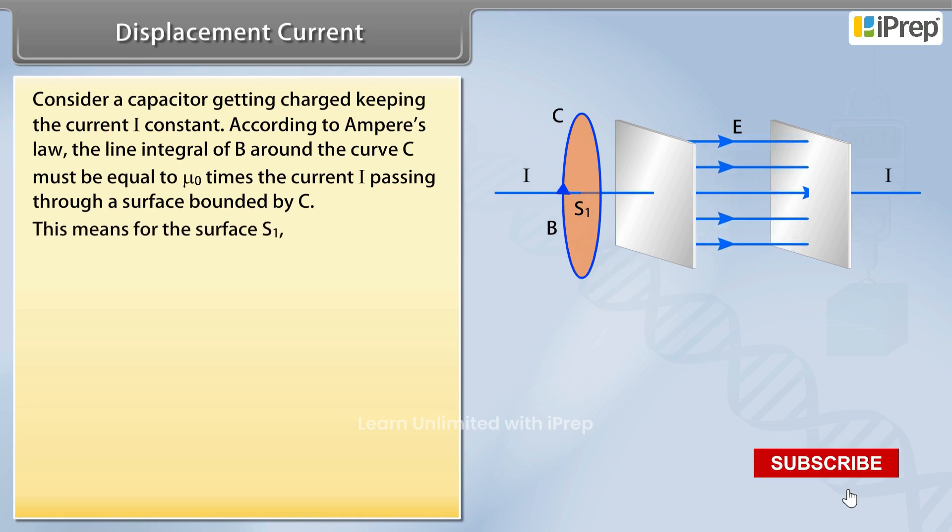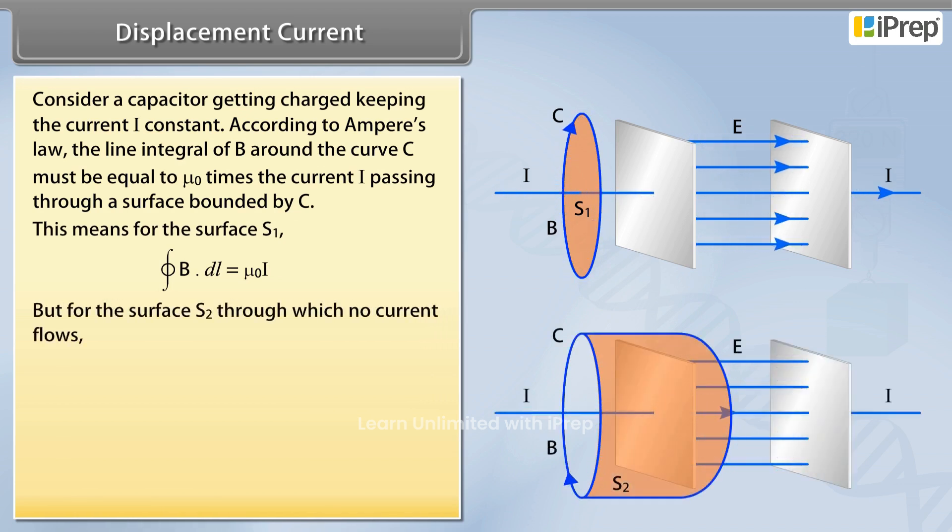This means for the surface S1, closed integral of B dot DL is equal to mu naught I. But for the surface S2 through which no current flows, closed integral of B dot DL is equal to zero.